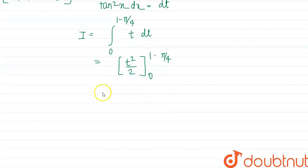So this will become I is equal to (1 - π/4)² / 2.